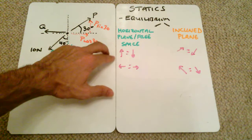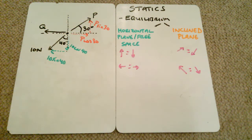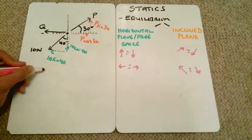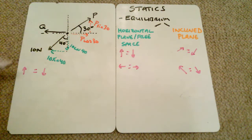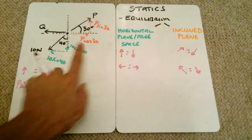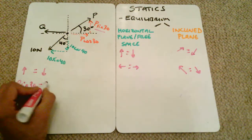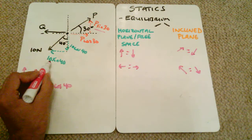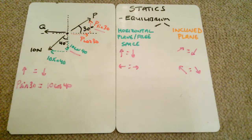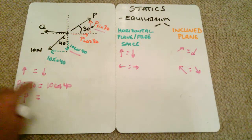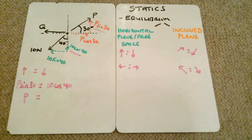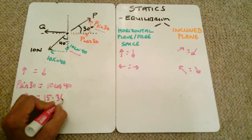Now we apply up equals down, and left equals right. The only force going up is P sin 30. The forces going down include the 10 sin 40 component. Setting up equals down: P sin 30 equals 10 cos 40. Therefore P equals 10 cos 40 divided by sin 30, which gives us a value of 15.32 newtons.